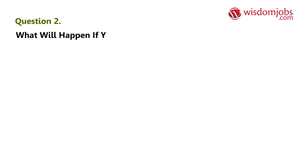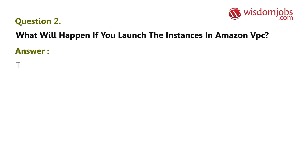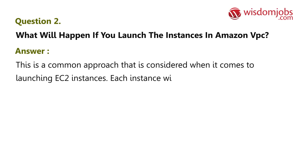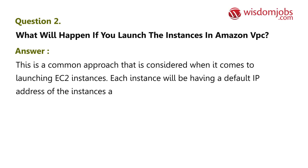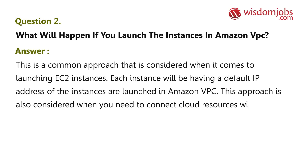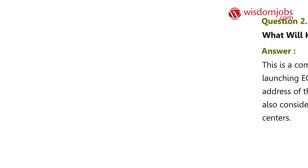Question 2: What will happen if you launch instances in Amazon VPC? Answer: This is a common approach considered when it comes to launching EC2 instances. Each instance will have a default IP address when instances are launched in Amazon VPC. This approach is also considered when you need to connect cloud resources with the data centers.